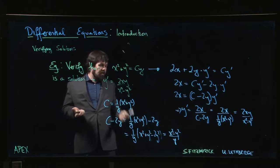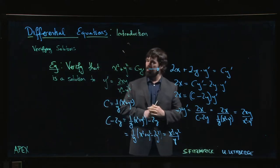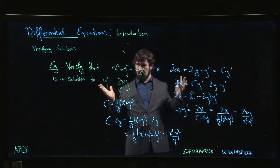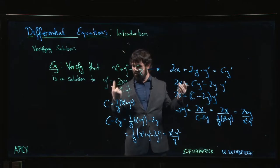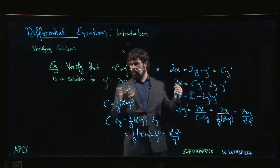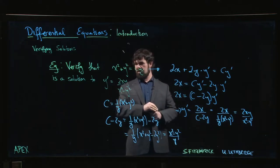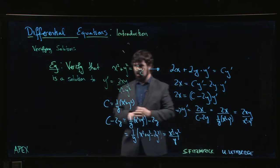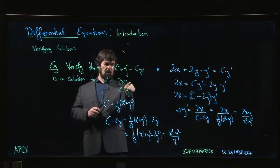For this to work, y can't be zero because of the 1 over y. What happens if y equals zero? Well, if y is zero, x is zero - there's a point solution there. Actually, y equals zero is a separate solution to this equation, but it doesn't fit here.